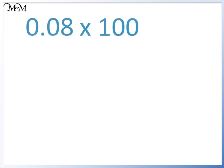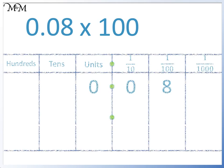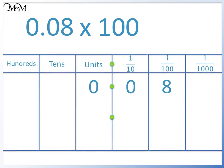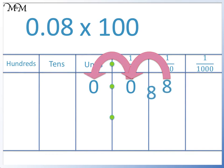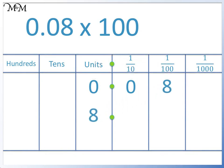This time we have 0.08 times 100. We move the 8 two places to the left. 0.08 times 100 equals 8.